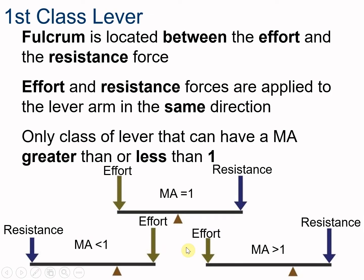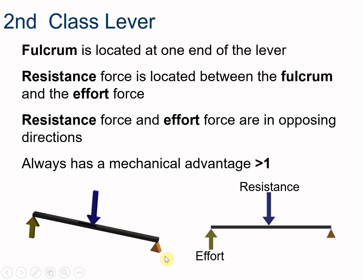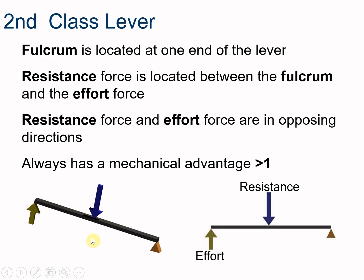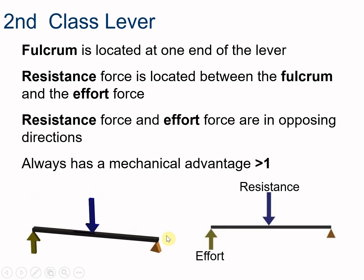The second class lever has the fulcrum way off to one side — it's no longer between the effort force and the resistance force. These always have a mechanical advantage greater than one, so the effort force is always less than the resistance force. This means we can lift heavy loads. A wheelbarrow is a great example: you lift on the handles, the wheel acts as the fulcrum, and you can lift far more weight than you normally could.